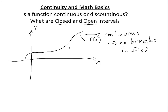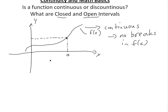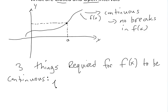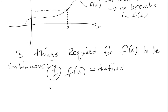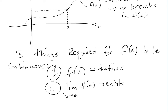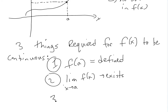Now, with continuity, if you want to know if a function is continuous at a certain point A, where x is A, there are three things required for it to be continuous. The first thing required is that f(A) has to be defined, which just means that if you plug it into f(x), you get a number out. The second requirement is that the limit as x approaches A of f(x) exists — meaning it's not infinity, you actually get a value there.